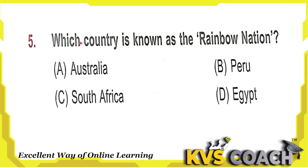Next question: which country is known as the Rainbow Nation? Option A is Australia — Australia is known as the Land Down Under. Option B is Peru — Peru is known as the Republic of Peru. Option C is South Africa — South Africa is known as the Rainbow Nation. Option D is Egypt — Egypt is known as the Land of Pharaohs. So the right answer is South Africa, option C.